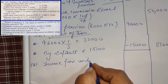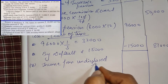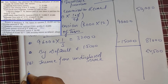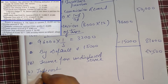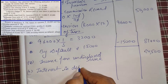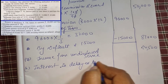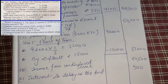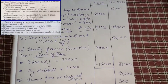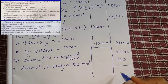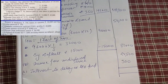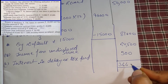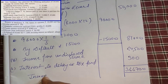Next, income from undisclosed resources — we will add directly: 84,500. Next, refund of income tax — interest included on delayed refund of tax is taxable, so 300 will be added. Now we total everything. Income from other sources: our total amount is 3,66,700.